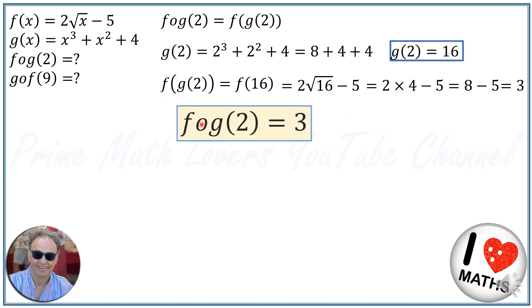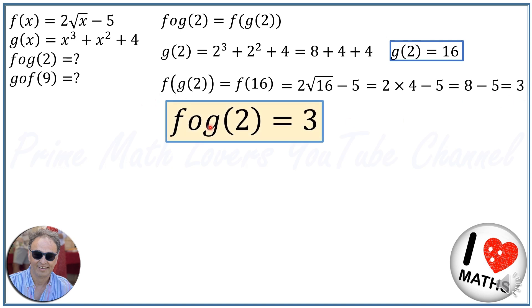So f∘g(2) = 3. We have solved the first part of the second question. Now for the second part, we need to find g∘f(9).